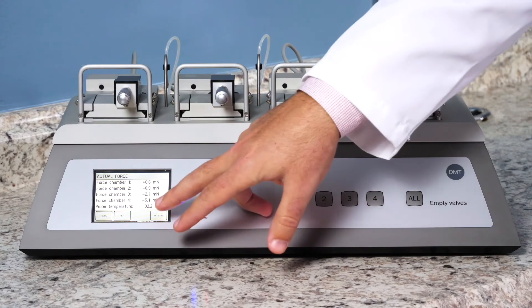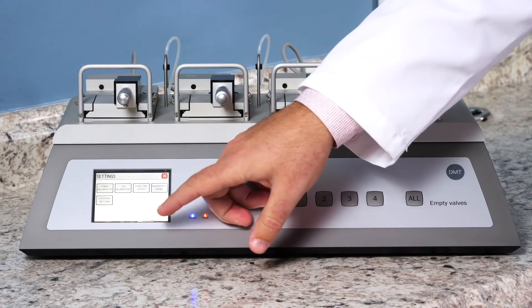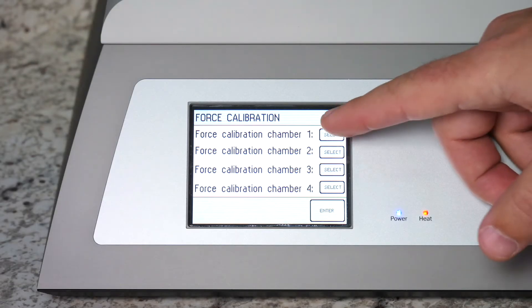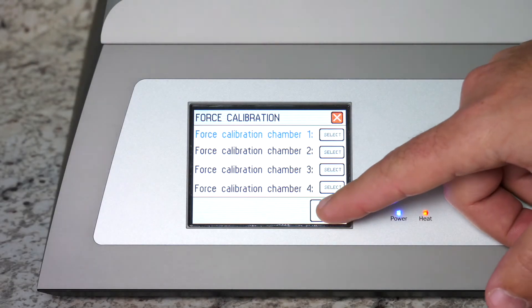To access the force calibration menu you will go to the settings menu and then the force calibration menu. You will then select the chamber that you're going to calibrate, highlight it and hit enter.